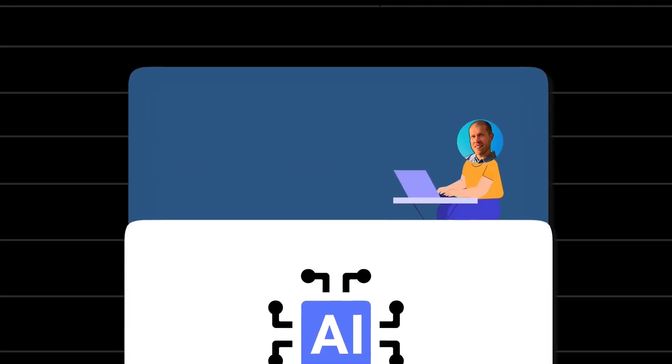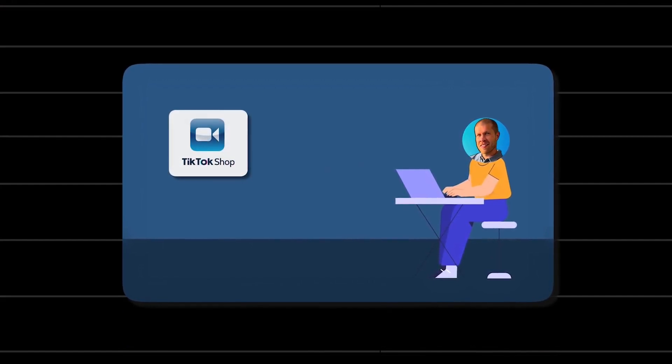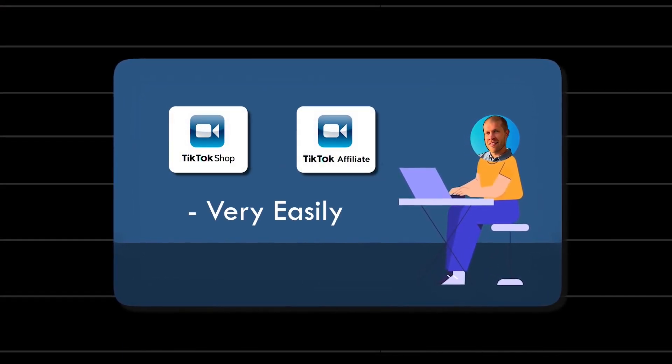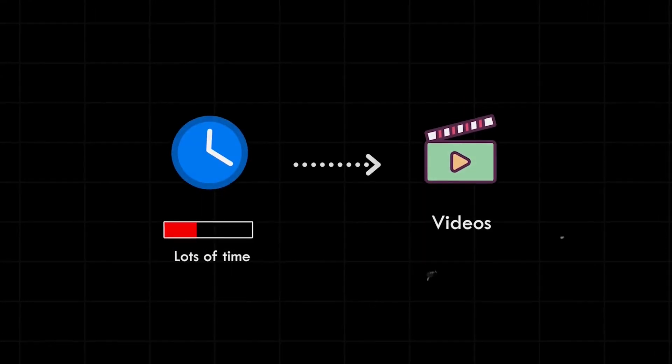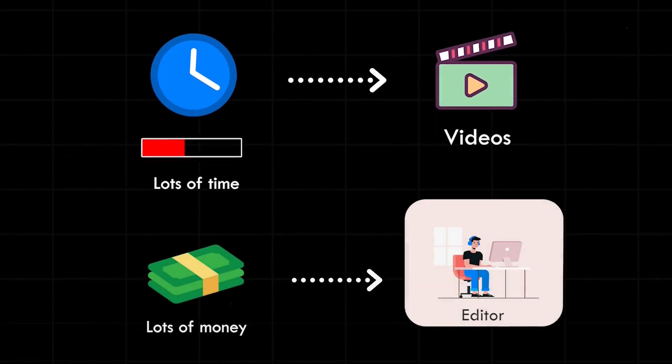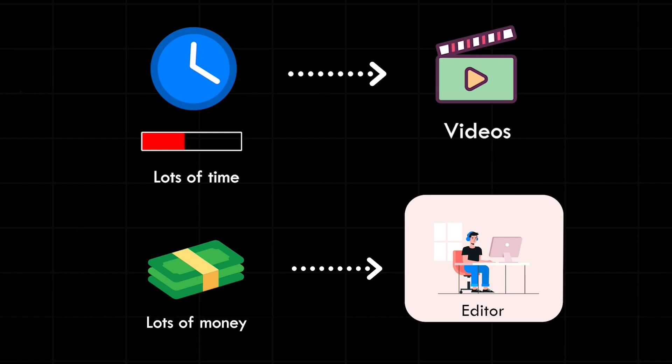I want to demo an AI software tool that I've been using to create TikTok shop videos and TikTok affiliate videos very easily. It does an extremely good job for what you're actually getting. If you have any experience doing this, you'll know that it takes either a lot of your time to create these videos, or it takes a lot of money to outsource it to an editor or a UGC content creator. And that can get expensive really fast. So this solves both of those problems.